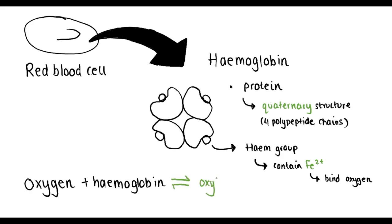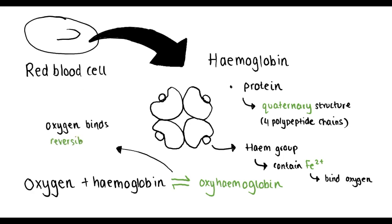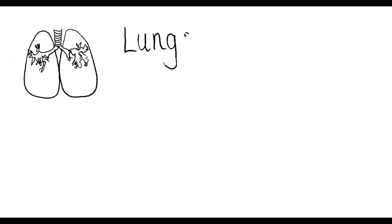When oxygen binds to haemoglobin — which we often call loading — oxyhaemoglobin is formed. This reaction is reversible when oxygen unloads. We talk about the loading and unloading of oxygen from haemoglobin in relation to our lungs and our tissues.